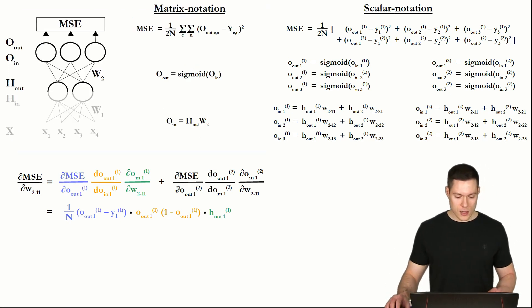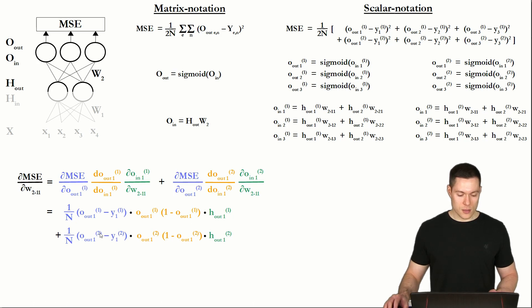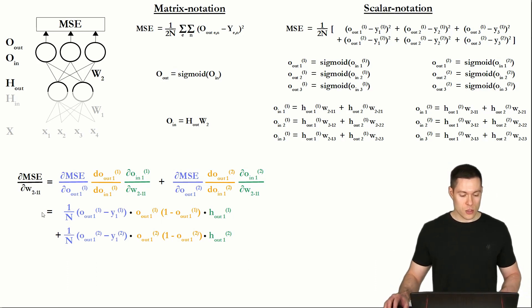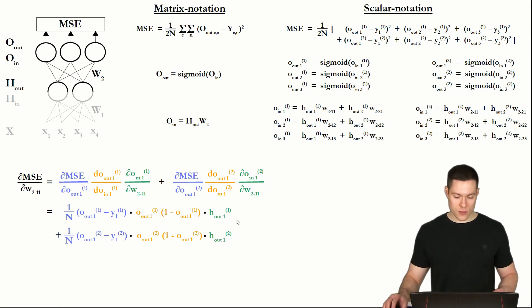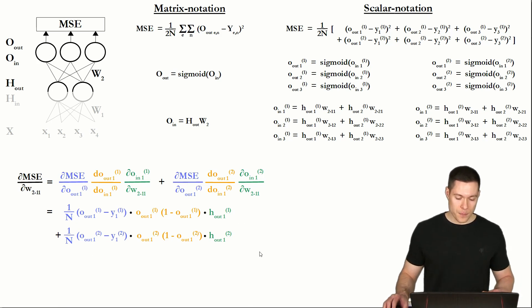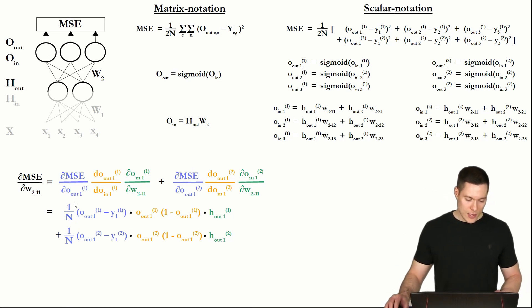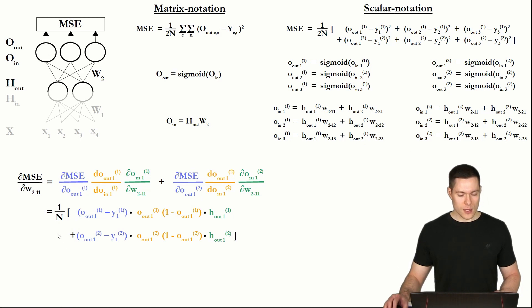So now let's write out what those expressions look like. There's not much different going on — the only difference is that the superscript is 2 instead of 1, so we use the terms of example 2. This is now how we can determine the partial derivative of the mean squared error with respect to weight 1,1 of weight matrix 2 for the case of two examples. If we would have more examples then we would have more of those lines. So let's rewrite this equation in a more general way using sigma notation — let's first factor out this 1 over n.